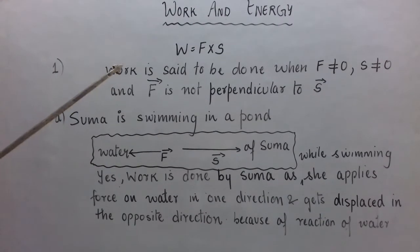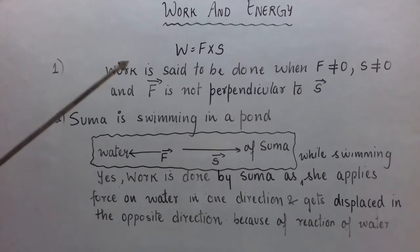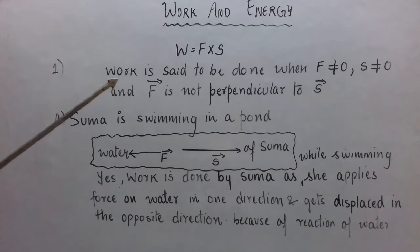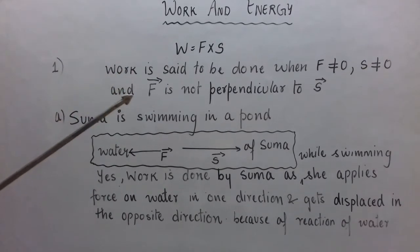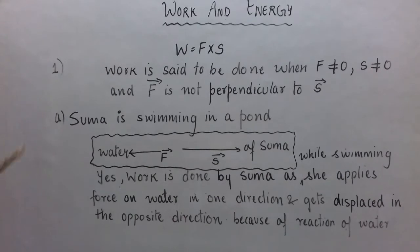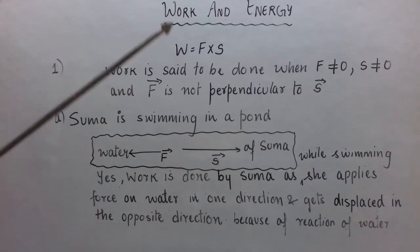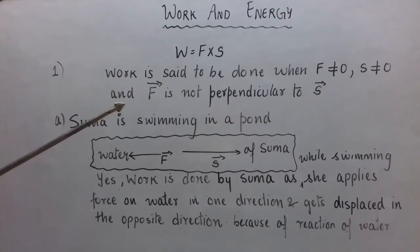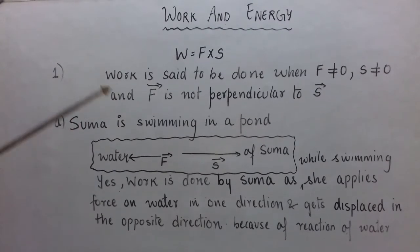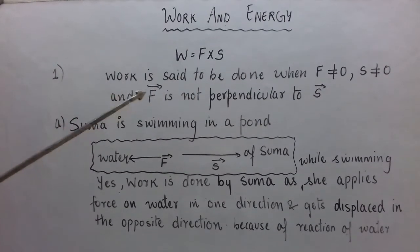W will be zero if any one factor is zero: if F is zero, or S is zero, or cos θ is zero. Theta is the smaller angle between force and displacement. Cos θ equals zero when theta is 90 degrees, meaning when force and displacement are perpendicular to each other. So work is said to be done when F is not zero, S is not zero, and F is not perpendicular to S.